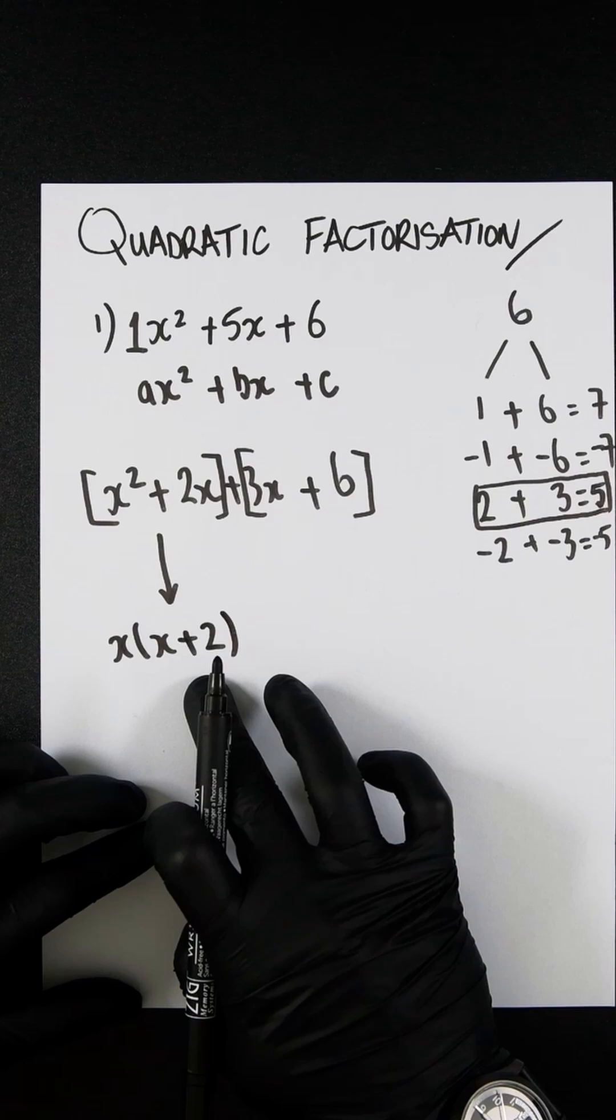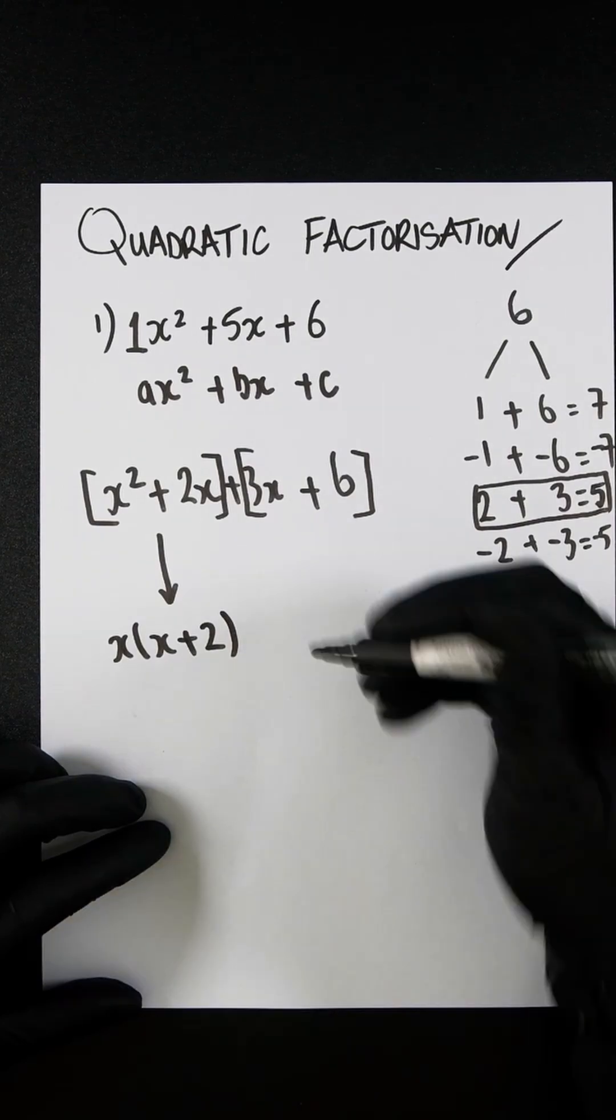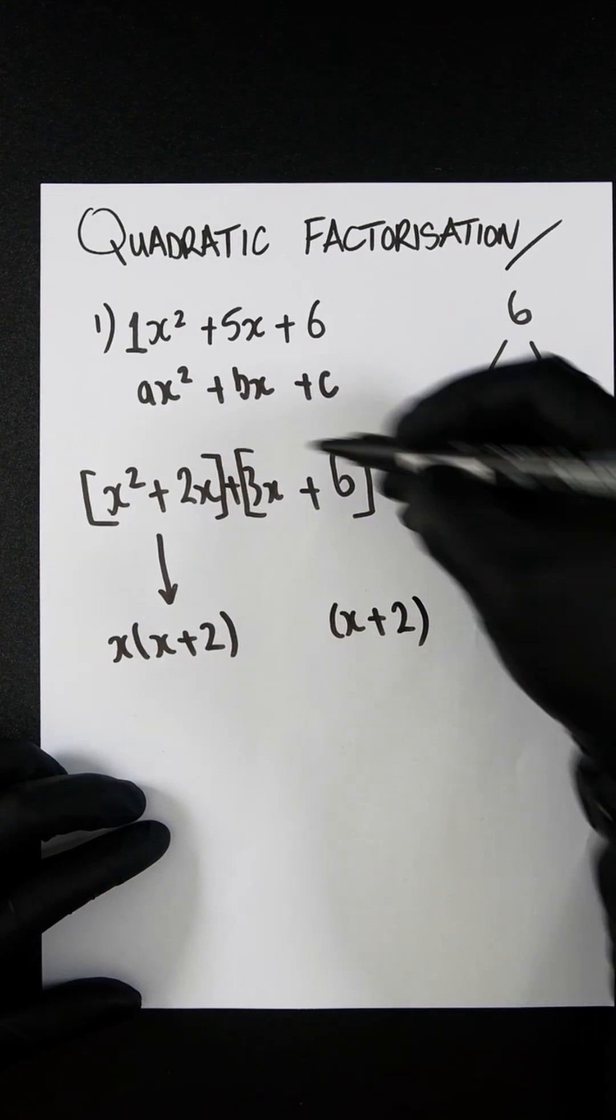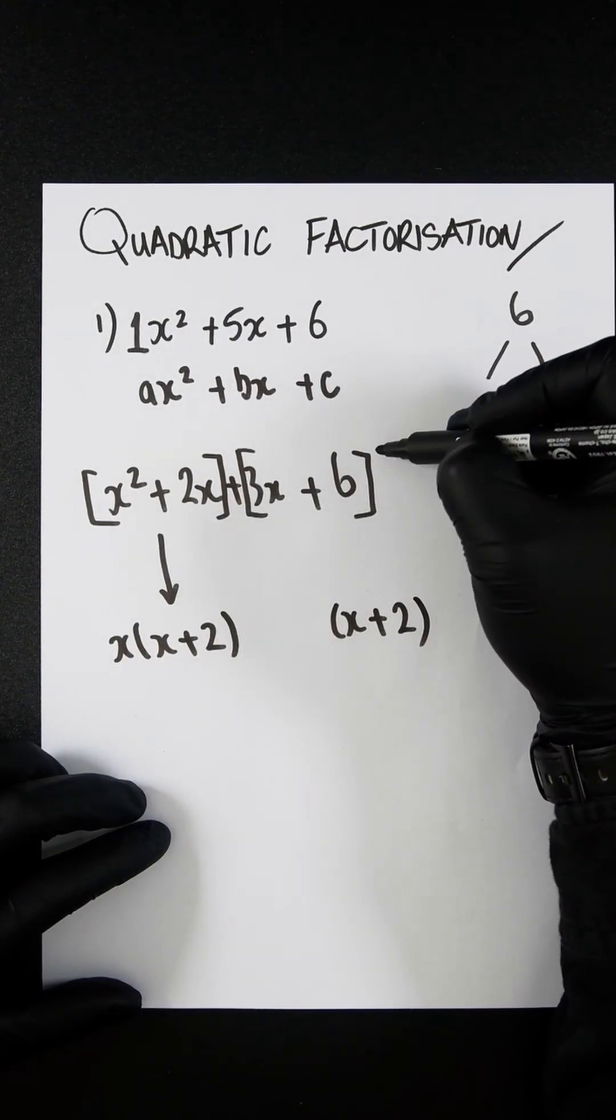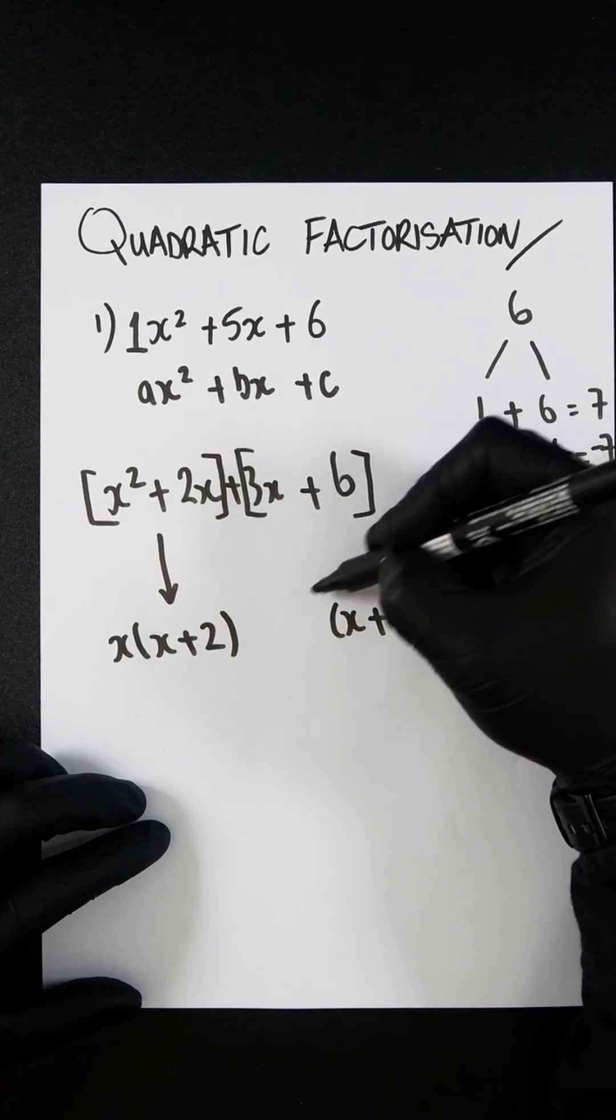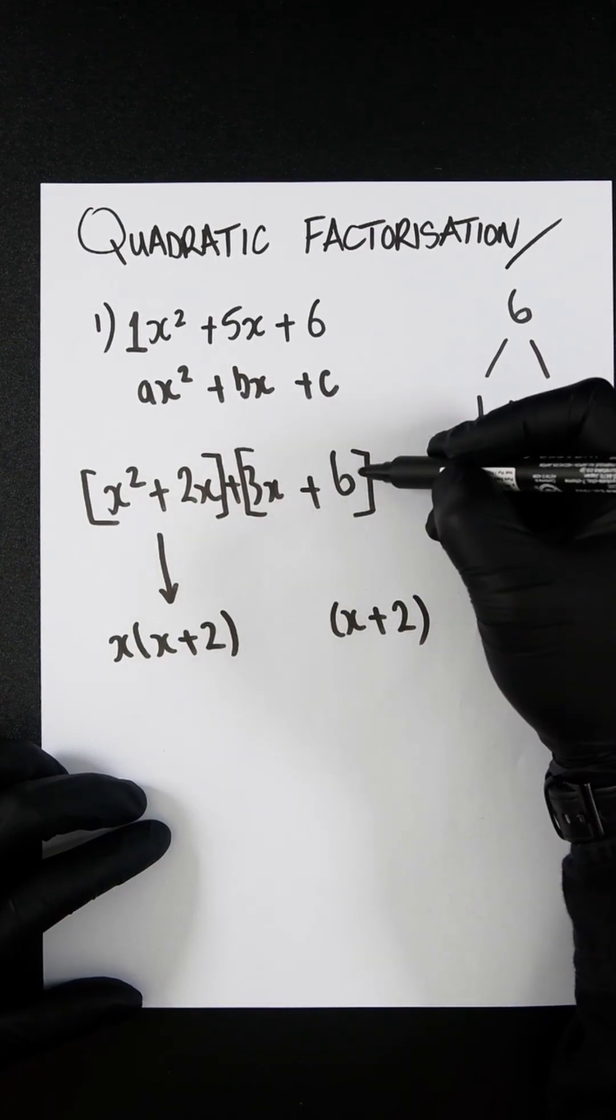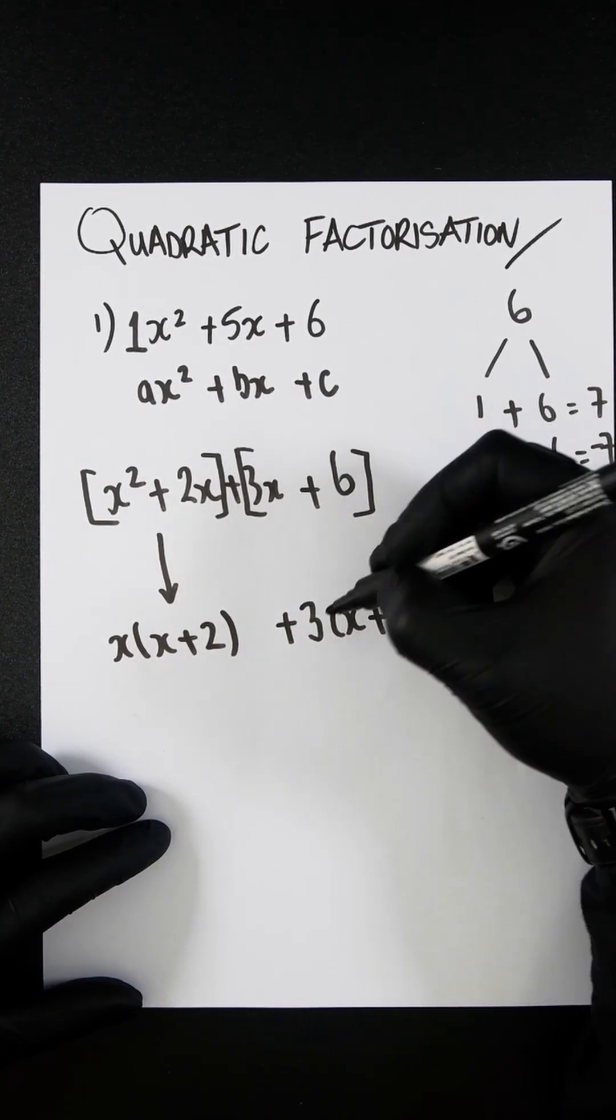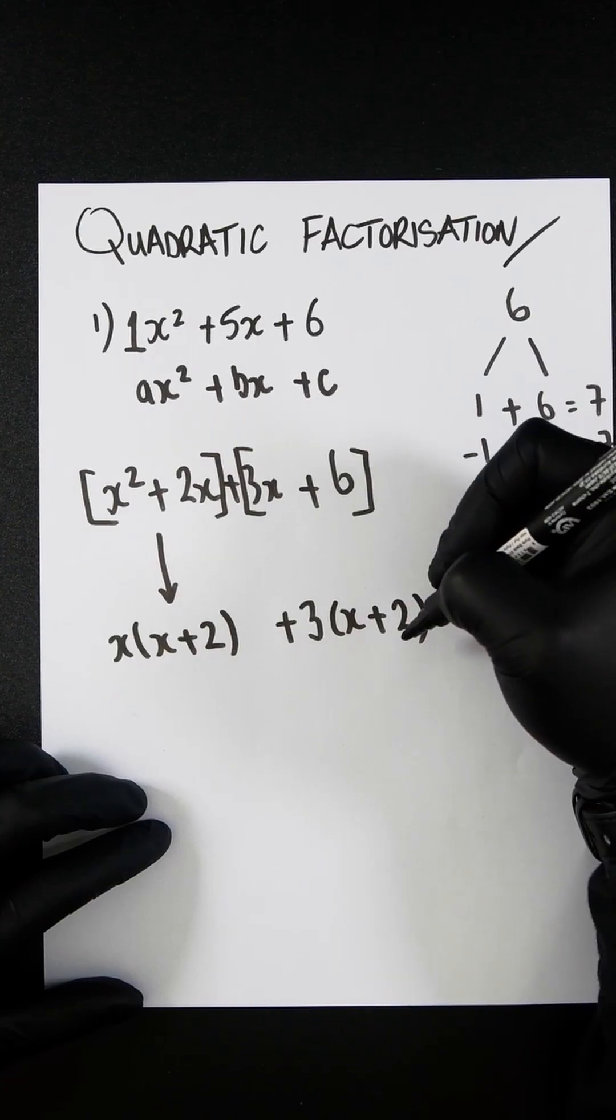Whatever is inside these brackets, replicate it again. So x + 2. Now look at the second part. What do you need to put outside the brackets when multiplied in will equal 3x + 6? It's going to be +3 because 3 × x = 3x, and 3 × 2 = 6.